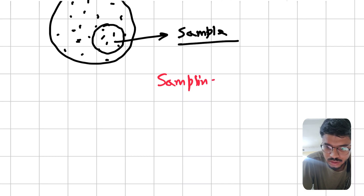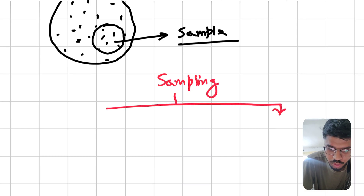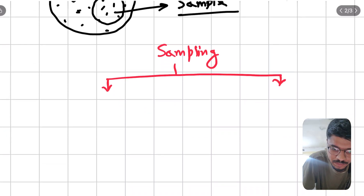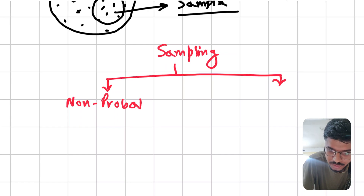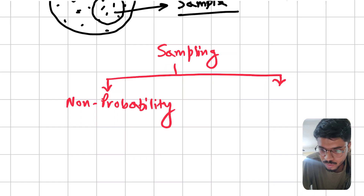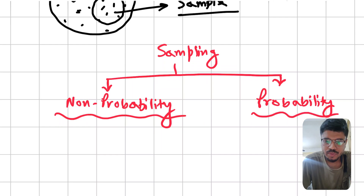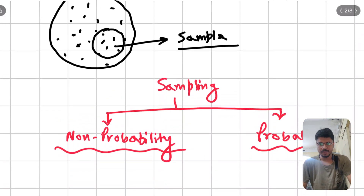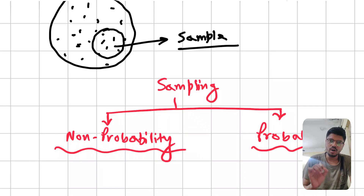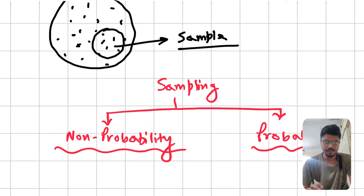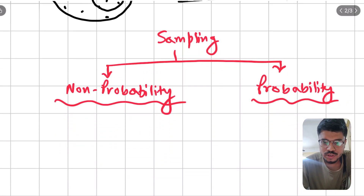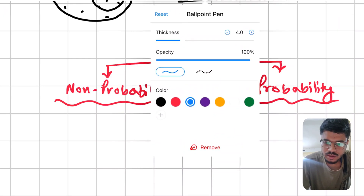Sampling is mainly of two types: one is non-probability sampling and one is probability sampling. Non-probability sampling means the probability of being selected is unknown, and probability sampling means the probability of being selected is known.